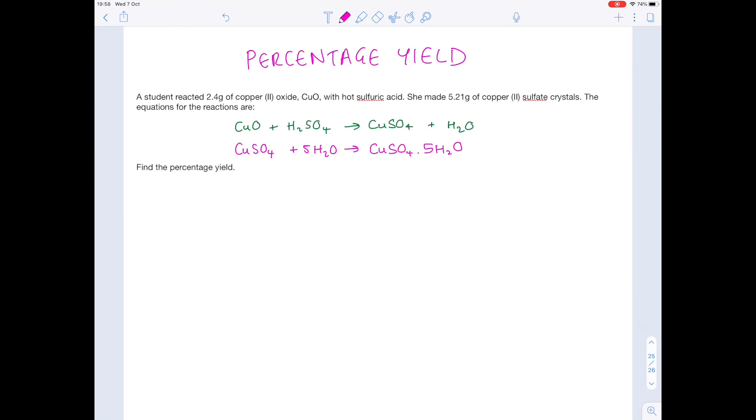Anyway, I'm going to talk you through how we're going to solve this question. A student reacted 2.4 grams of copper(II) oxide, CuO, with hot sulfuric acid. She made 5.21 grams of copper(II) sulfate crystals. The equations for the reactions are: find the percentage yield. We can automatically see that this is quite a complicated question simply because there are two equations given.